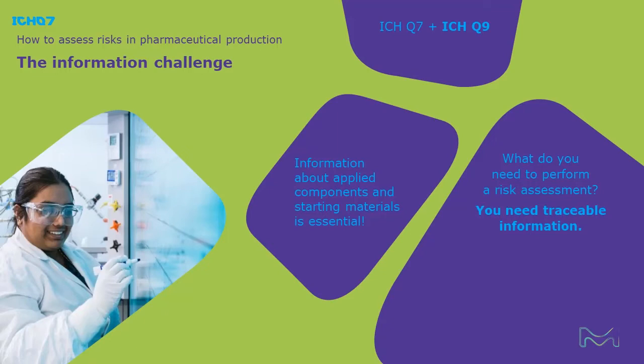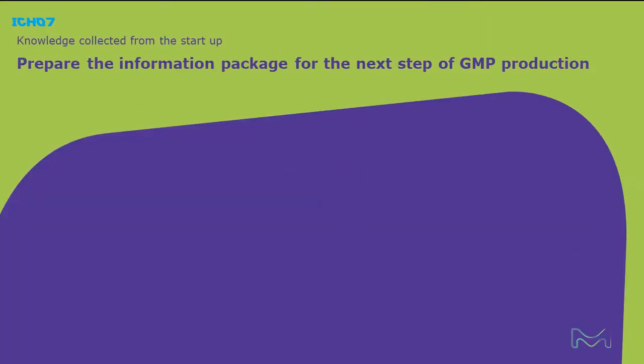To perform a successful risk assessment, the manufacturing process needs to be evaluated in detail. Raw materials play a critical role in the manufacturing process. Therefore, traceable information about the raw and starting materials used in manufacturing becomes essential. Having such information already in early steps of development may reduce later risks and effort significantly. The following information about materials used in production may present a starting point for a risk assessment of raw material impact to the drug.